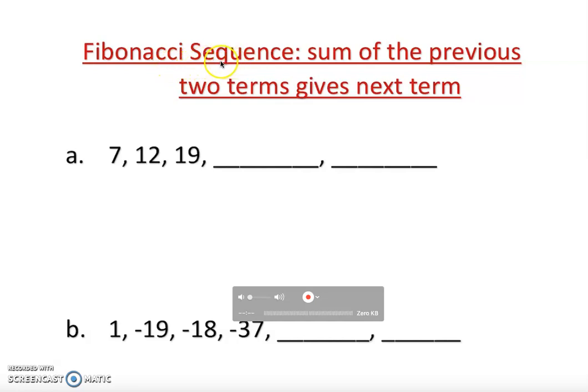Fibonacci sequence is a sequence where any two numbers, adding those two numbers gives you the third number, or third term I should say. Any previous two terms, sum of previous two terms will give you the next term. So that's the definition. Sum of the previous two terms gives you the next term.